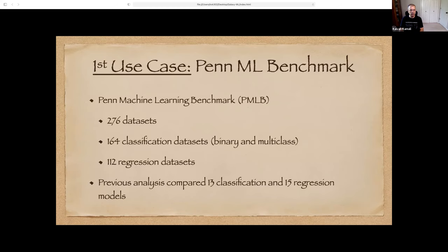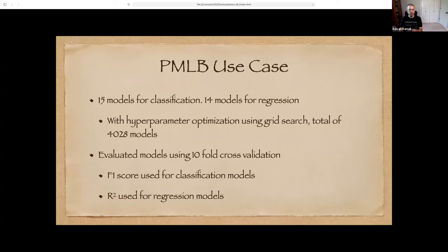The first use case is the Penn Machine Learning Benchmark — 276 datasets: 164 classification with binary or multi-class labels, and 112 regression datasets. There was a previous analysis comparing various classification and regression models. We created 15 models for classification, 14 for regression, and used hyperparameter optimization for a total of 4,028 models. We specify a range for a parameter, try different values in that range, and find which value results in the best model.